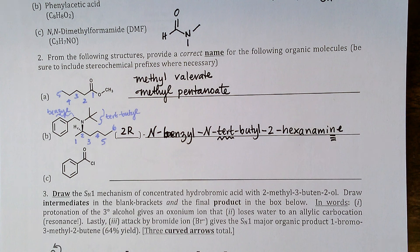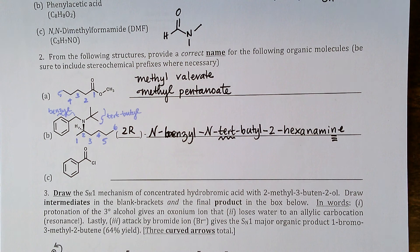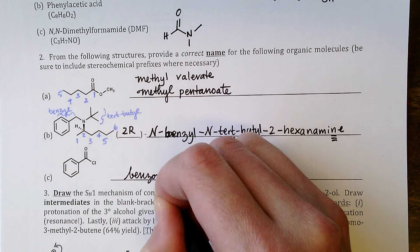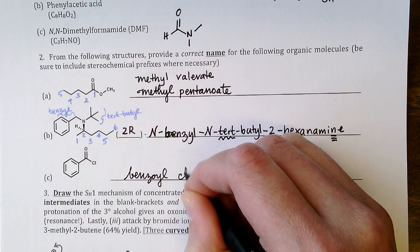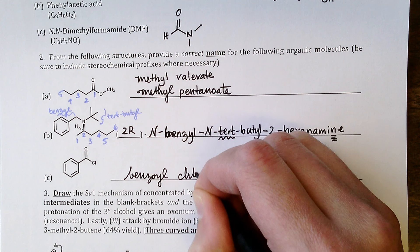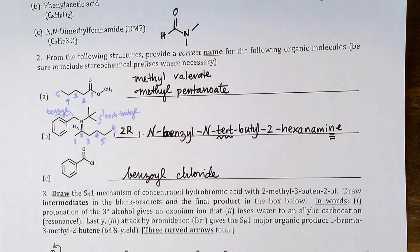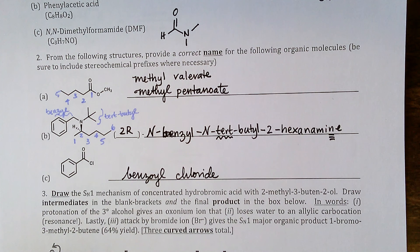Part c is the acid chloride of benzoic acid. We replace the -oic acid suffix with -oyl chloride, giving benzoyl chloride. You could also have said benzene carbonyl chloride, although benzoyl chloride is certainly preferred.